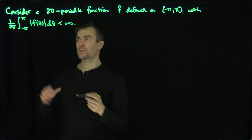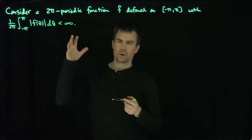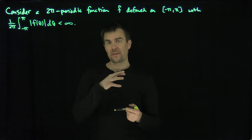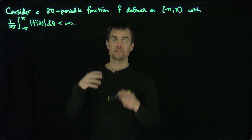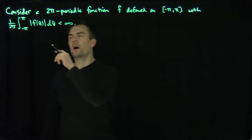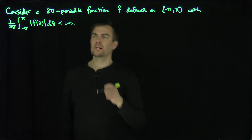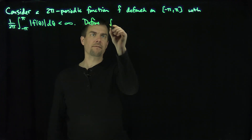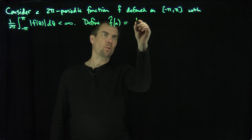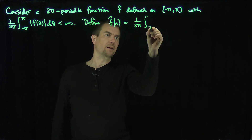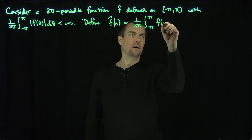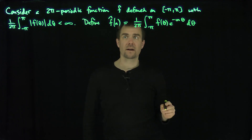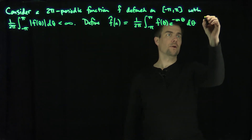For these functions, we can define — we want to think of f as a continuous function or a Riemann integrable function, but the technical condition is Lebesgue integrability. We'll learn about that in a future video, which makes this L1 space complete. So we define f̂(n), where n is in ℤ, to be 1 over 2π times the integral from negative π to π of f(θ) e^(−inθ) dθ. This is the nth Fourier coefficient of the function f.